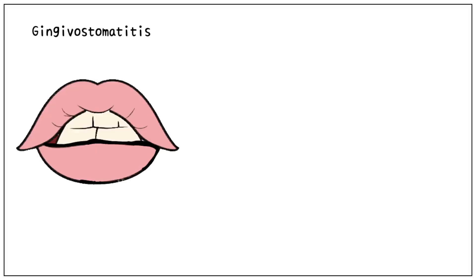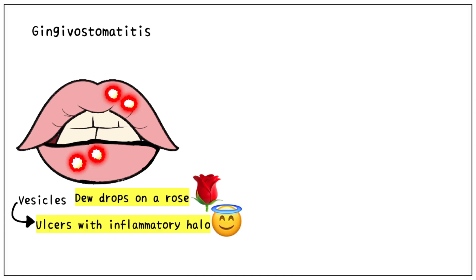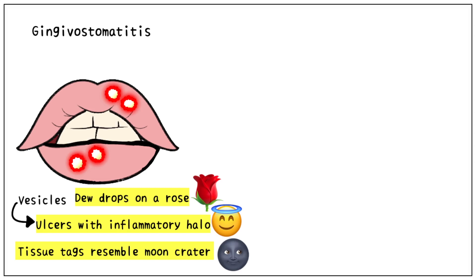HHV1 is primarily responsible for causing gingivostomatitis, which is more common in children. It is characterized by blister-like lesions on the oral mucosa accompanied by lymphadenopathy. These vesicles have been romantically described as dewdrops on a rose. They eventually burst to form ulcers with an inflammatory halo. The bursting vesicles leave behind tissue tags, which have been described as moon craters. All of these are extremely important for multiple choice questions.